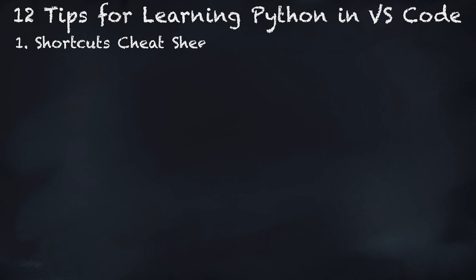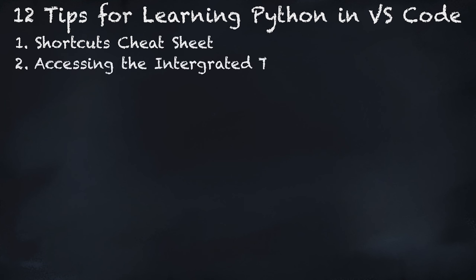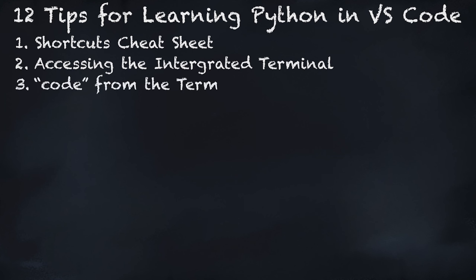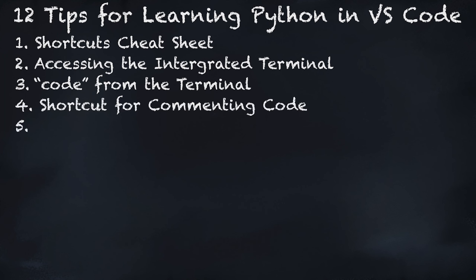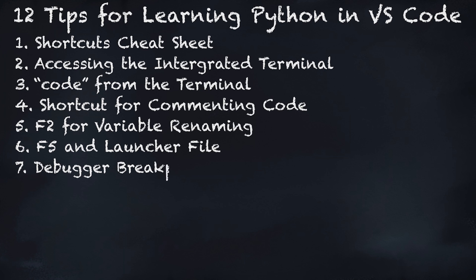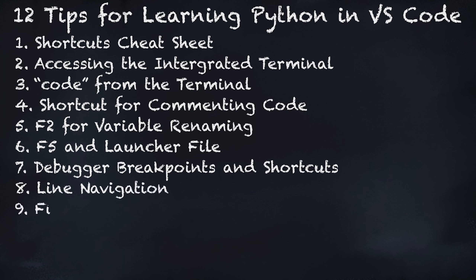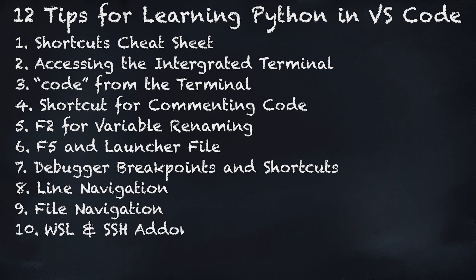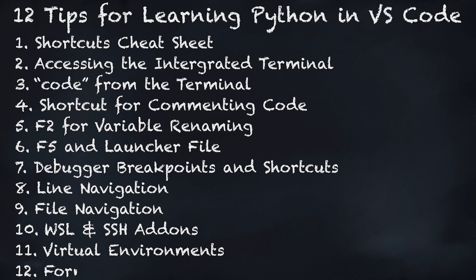First, we'll look at the shortcuts cheat sheet — how to open and access it. Then we're going to use the integrated terminal in VS Code, access code from the terminal, whether it's the VS Code terminal or your system default terminal. We're going to look at the shortcut for commenting code, use F2 for refactoring or variable renaming, F5 to launch your program in debug mode, and create a launcher file for custom configurations. We'll look at using the debugger with breakpoints, shortcuts for stepping through code, line navigation, file navigation, the WSL and SSH add-ons, Python virtual environments, and finally code formatters and linters.